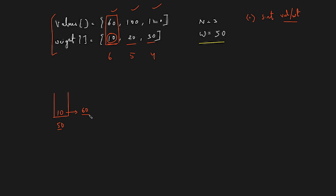Moving to the next item with value per weight of 5, it's still beneficial to pick the entire item because items further right have even lower value per weight. So we pick it completely and add value 100 to our answer.